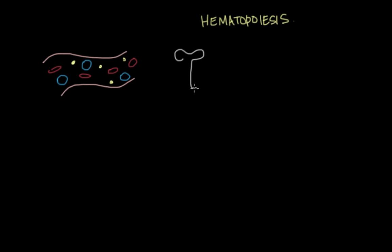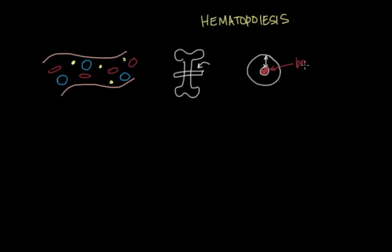So the cells in the blood are made inside the bone. And if you were to take a cross section of bone and look at it, you'd see that on the inside of bone there's a central cavity. This is the outside part of the bone, the hard part, and this is the central cavity. And inside that cavity there's this red spongy tissue. And that stuff is called bone marrow. Bone marrow is where all of these blood cells are made. So it's the site of hematopoiesis. Hemato means blood, and poiesis means to form or to make. So hematopoiesis is just the scary Greek word that means to make blood.